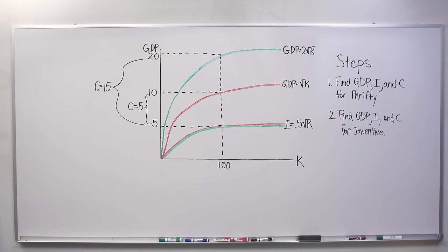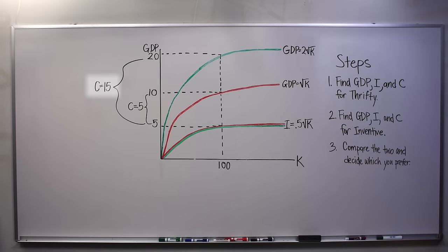So we now move on to step 3, which is to compare the two. Inventive seems like the clear winner here. Not only does it have a much higher GDP than Thrifty, but more importantly for the citizen, the amount of GDP available for consumption is much higher: Inventive's 15 compared to Thrifty's 5.